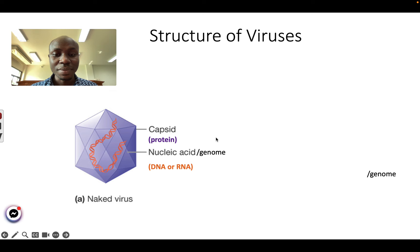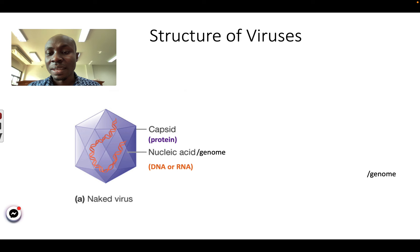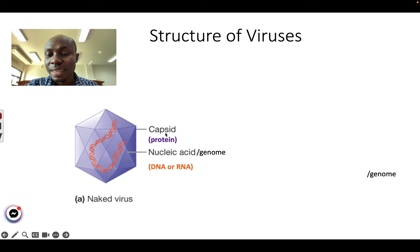Now let's talk about the structure of viruses. They are very simple objects. Some viruses have only two things in their structure. They have a DNA or RNA, which we call the genome — the genes. And around the genome, we have a protein which we call the capsid. It has a genome and a capsid.